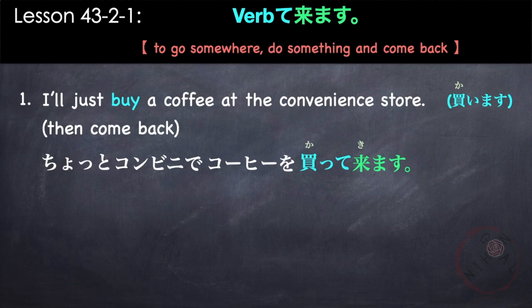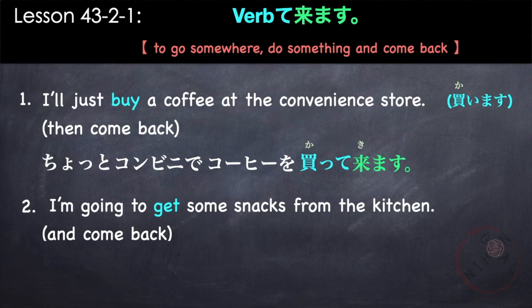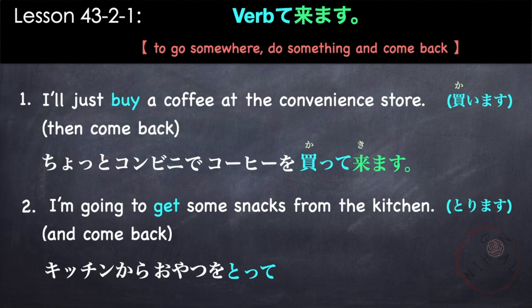Another example: 'I'm going to get some snacks from the kitchen and then come back.' Our verb is torimasu, to get. Kitchin kara o-yatsu wo totte kimasu ne. Kitchin kara o-yatsu wo totte kimasu ne.